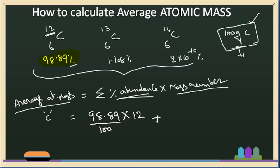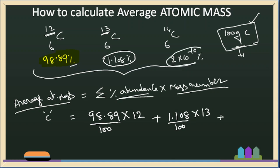Plus, for the next isotope, C-13 has percentage abundance 1.108, multiplied by its mass number 13, divided by 100. Plus, for C-14, the percentage abundance is 0.2 × 10⁻¹⁰ divided by 100, multiplied by mass number 14.